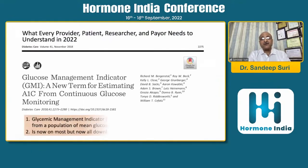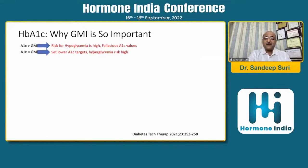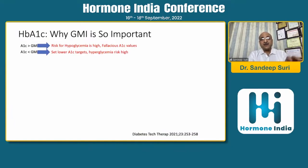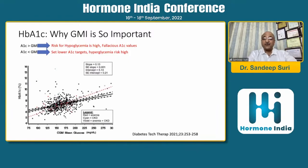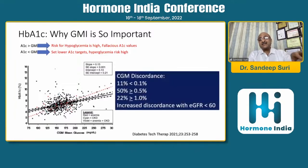The glucose management indicator (GMI) is also important. If there is a discrepancy between HbA1c and GMI: if HbA1c is on the higher side, the GMI risk of hypoglycemia is high - also look for fallacious HbA1c values. If GMI is on the higher side and HbA1c is on the lower side, set for lower HbA1c target as hyperglycemia risk is higher and you can be more aggressive. A regression line plot indicates 19% concordance between GMI and HbA1c.